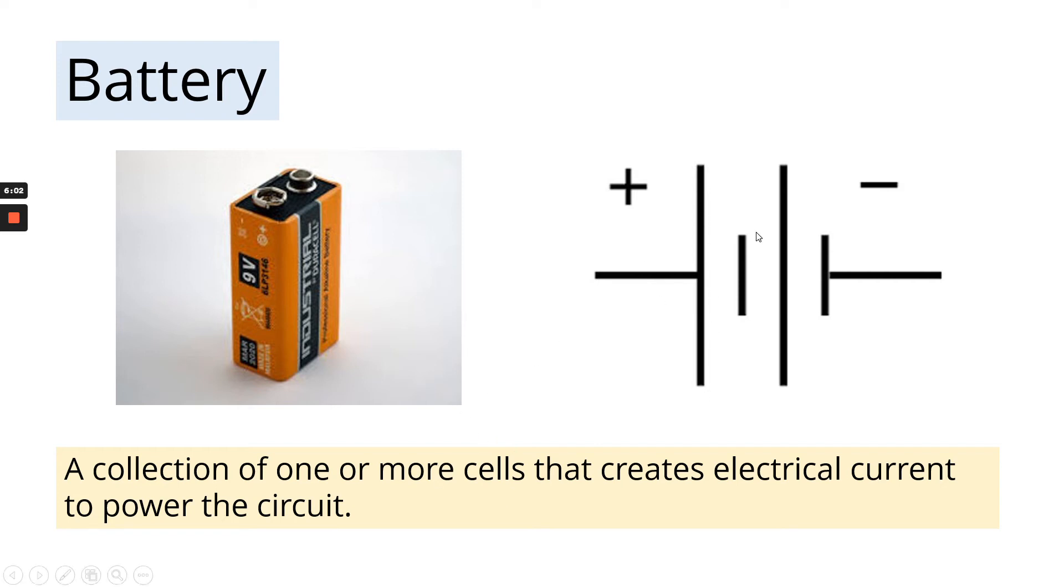So a battery is a collection of one or more cells that creates electrical current to power the circuit. But what is a cell? This long line and this short line, those two together, that is a cell. As soon as you've got more than one of these pairings next to each other, it becomes a battery. The more cells in a battery, the more electrical current it can generate.